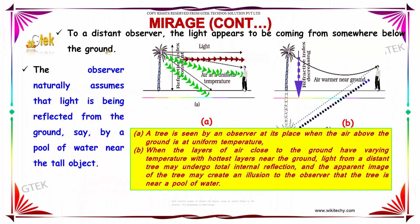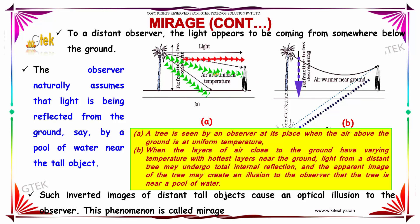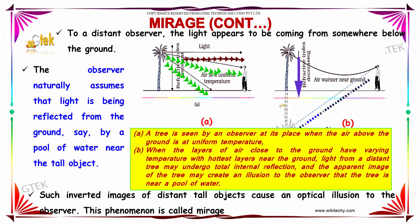To a distant observer, the light appears to be coming from somewhere below the ground. The observer naturally assumes that light is being reflected from the ground — say, by a pool of water near the tall object. Such inverted images of distant tall objects cause an optical illusion to the observer. This phenomenon is called a mirage.